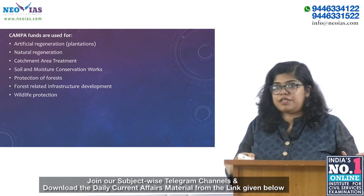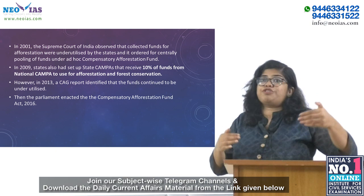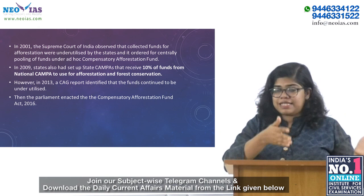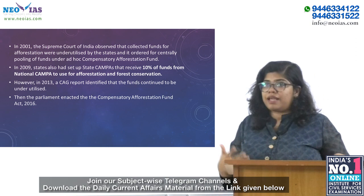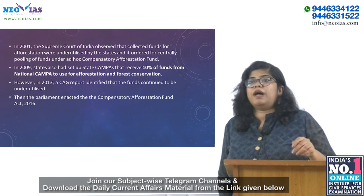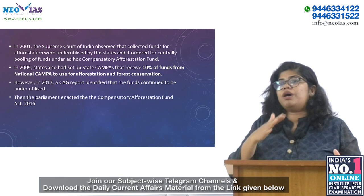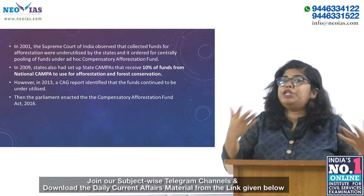CAMPA funds are also provided for wildlife protection and the constitution of a national- and state-level authority for fund administration. Under the recent Draft National Forest Policy of 2018, the government aims to bring 33 percent of the geographical area under forest or tree cover. If a company is diverting forest land, it must carry out compensatory afforestation projects and pay for planting new trees on alternative land provided by the state.